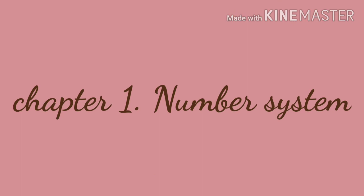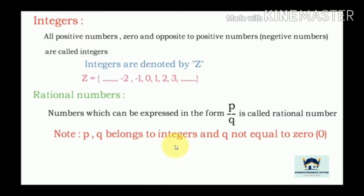In this video you are going to learn about number system — that is rational numbers, irrational numbers, and how to find rational numbers between two given rational numbers. In your earlier classes you have learnt about integers and denoting integers on the number line. Integers means all positive numbers, 0, and negative numbers. Integers are denoted by Z.